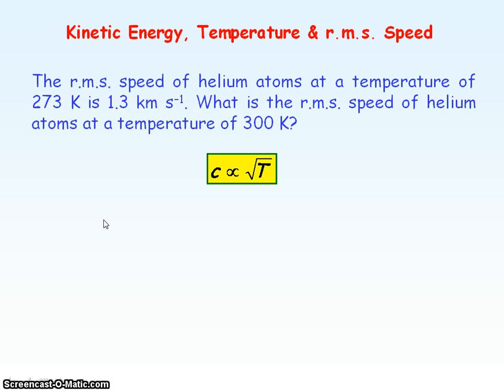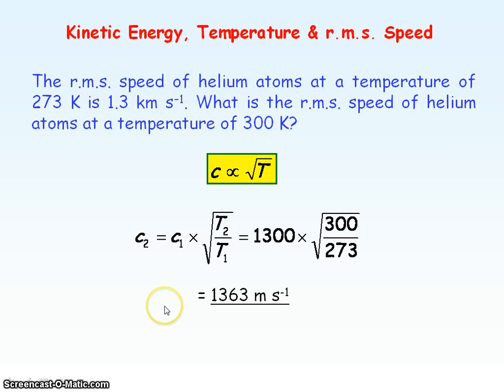And if we take the square root of that ratio, we get the ratio of the RMS speed. So to determine the new RMS speed, we times that ratio by the 1.3 km per second, which will give us the new RMS speed as 1.36 km per second.